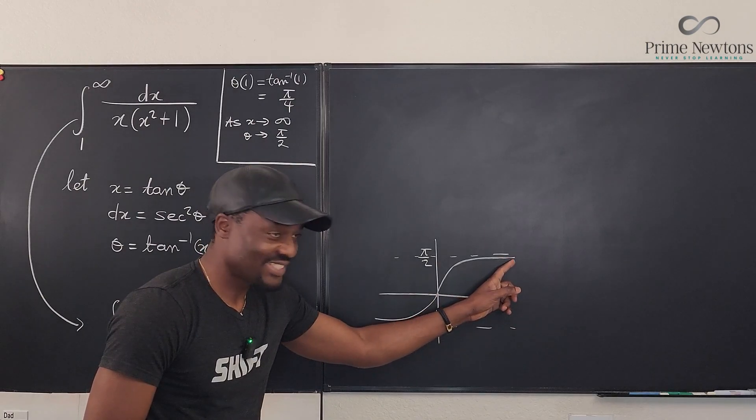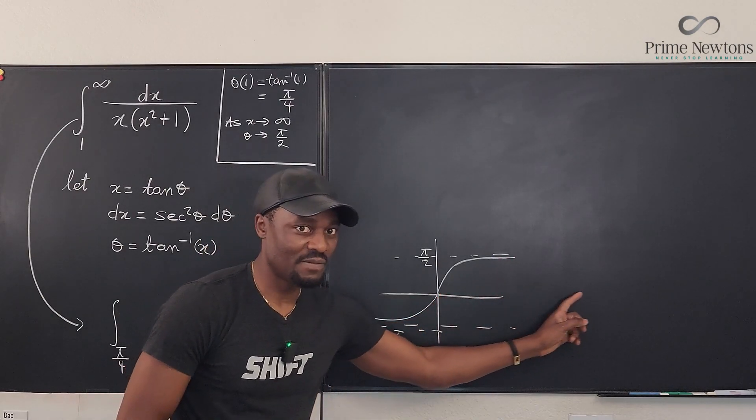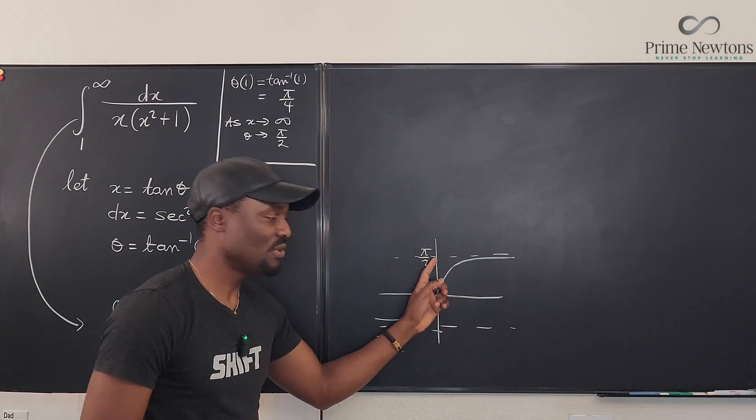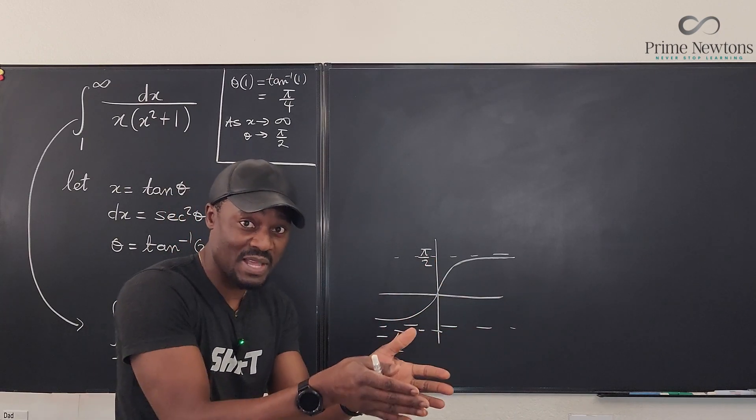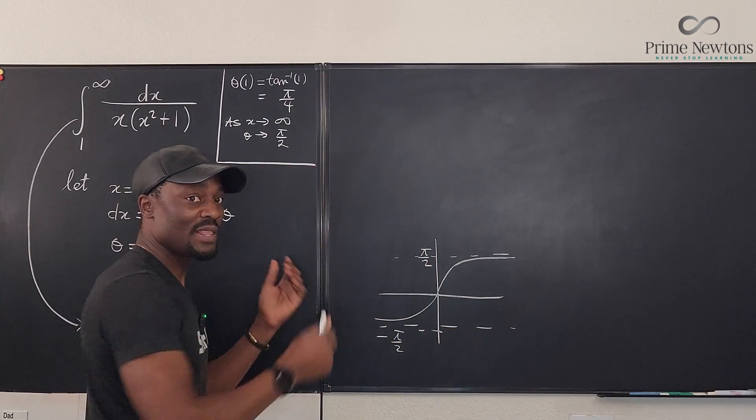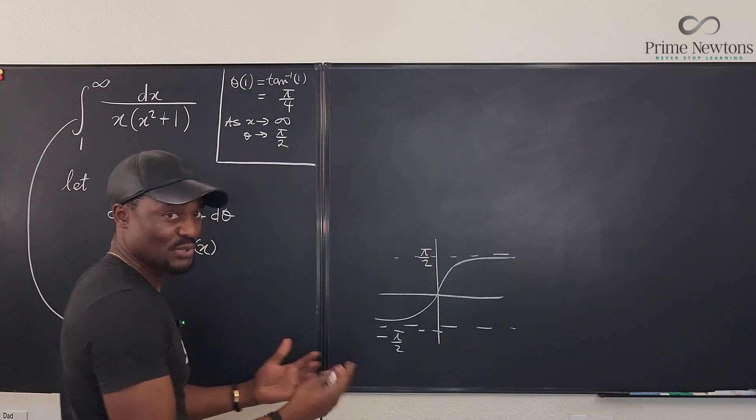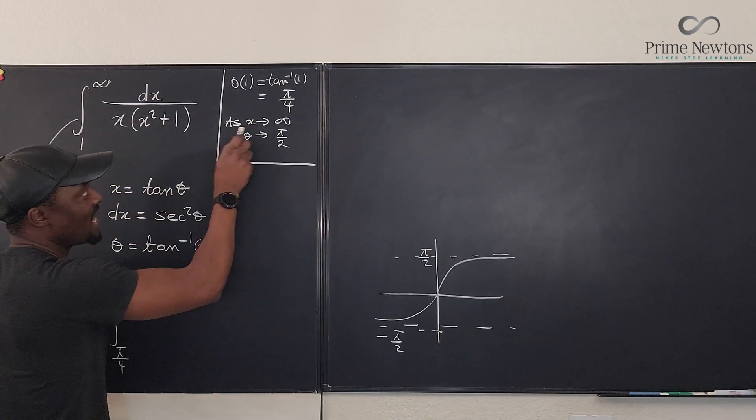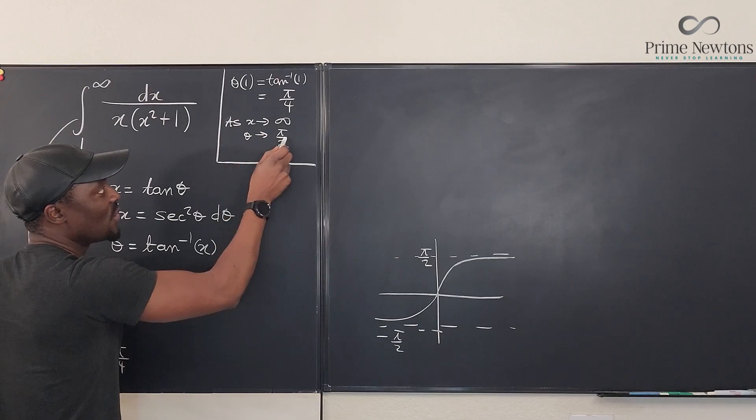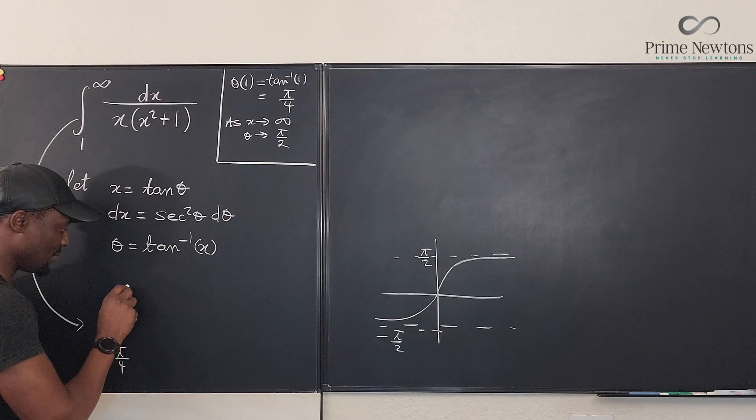As x goes to infinity, this is only approaching π over two. That's the maximum it's approaching. So the limit is π over two, and that's why this is an improper integral, because you take limits. As x goes to infinity, θ goes to π over two, and that becomes the upper boundary.